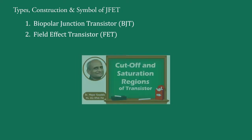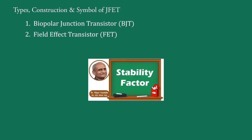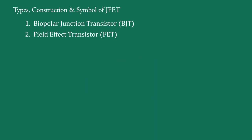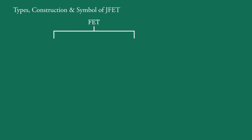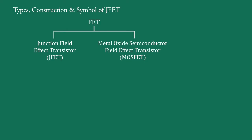In my previous series of videos, a lot of information about Bipolar Junction Transistor was given. Now, in this series of videos, I am going to describe Field Effect Transistors. There are two types: the first is the Junction Field Effect Transistor, i.e. JFET, and the second is the Metal Oxide Semiconductor Field Effect Transistor, i.e. MOSFET, also known as Insulated Gate Field Effect Transistor, i.e. IGFET. For simplicity, we will refer to them as JFET and MOSFET.